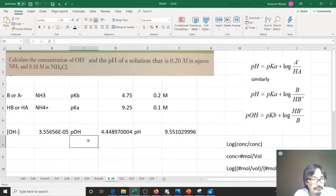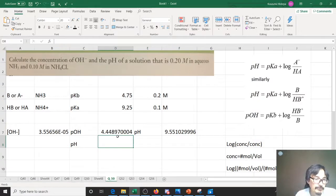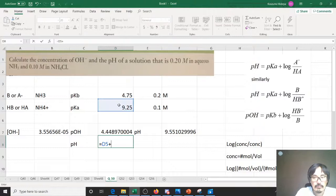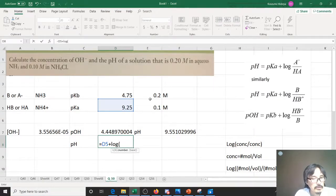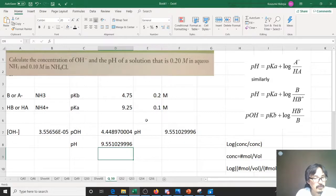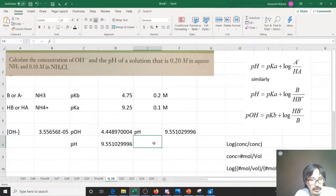You can also get the pH using the very first formula. It's equal to pKa plus log of A- divided by HA, and that number is the same.